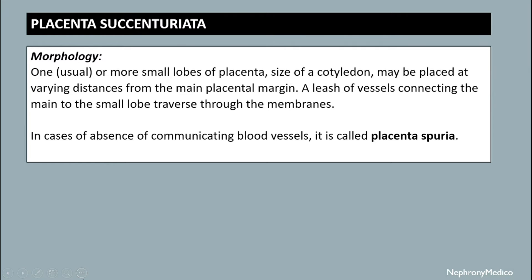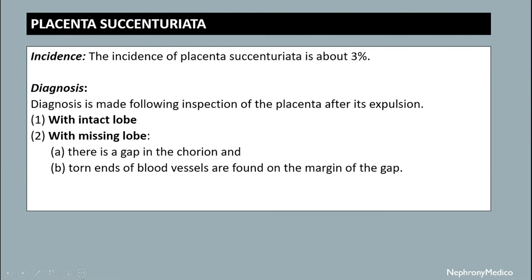In case of absence of a connecting blood vessel, it is called placenta spuria. The incidence of placenta succenturiata is about 3%. Diagnosis is made following inspection of the placenta after its expulsion — with an intact lobe or with a missing lobe, there is a gap in the chorion and torn ends of blood vessels are found on the margin of the gap.